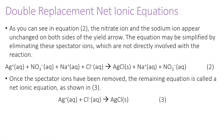As we can see in equation 2, the nitrate ion and the sodium ion appear unchanged on both sides of the yield arrow. This equation may be simplified by eliminating these spectator ions, which are not directly involved in the reaction. Spectator ions are ions in a double replacement reaction that don't actually react. They're kind of like spectators at a sporting event — they're there watching, but they're not really participating.